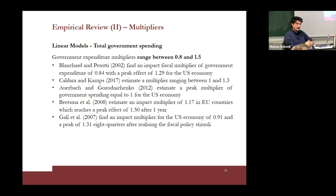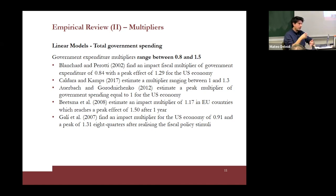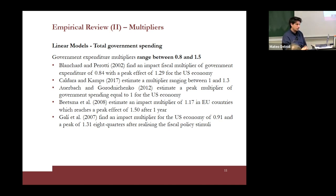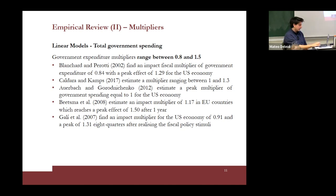The more important literature on fiscal policy, using linear models, shows that multipliers range between 0.8 and 1.5, meaning multipliers are in general positive and in many model specifications greater than one. Two important papers stand out: Blanchard and Perotti's paper found an impact multiplier in the US economy of 0.84 and a peak effect of 1.29. Another important paper is by Auerbach and Gorodnichenko, the first authors to introduce non-linearities in estimating fiscal multipliers.